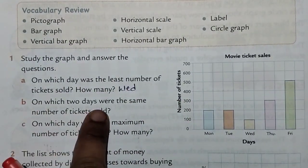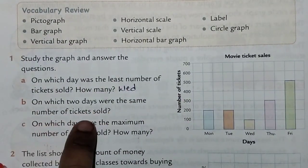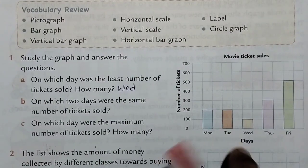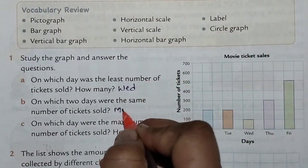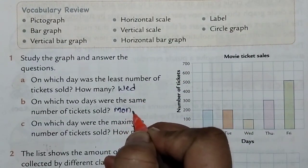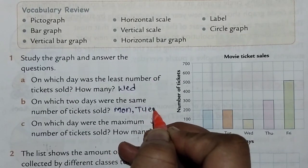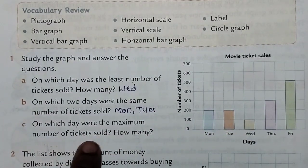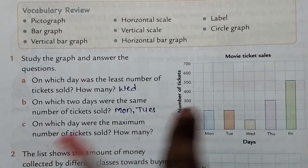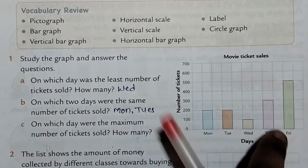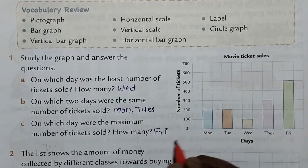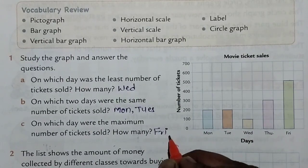On which two days were the same number of tickets sold? The answer is Monday and Tuesday. On which day were the maximum number of tickets sold, and how many? You will know that I have to write the number of tickets sold. The answer is Friday, so we write the number of tickets on Friday.